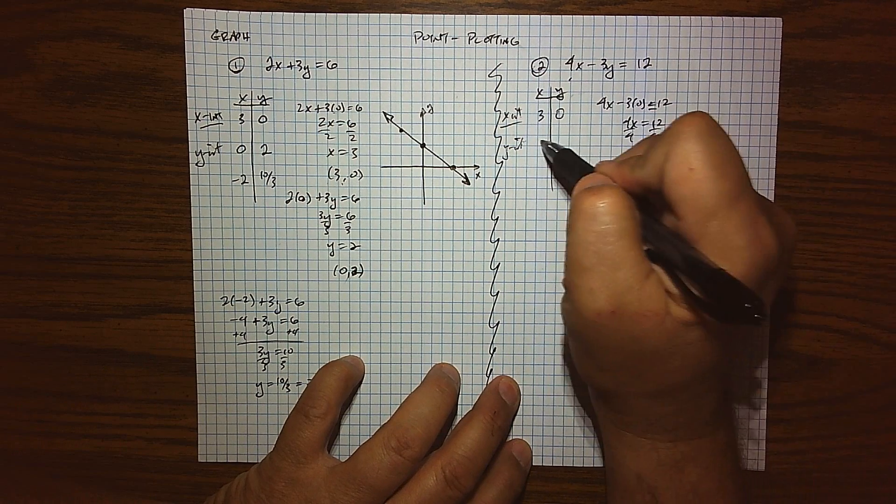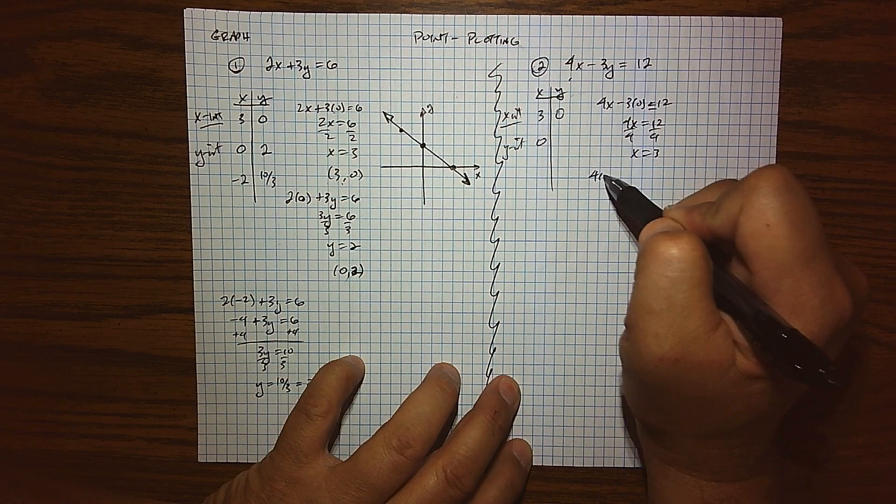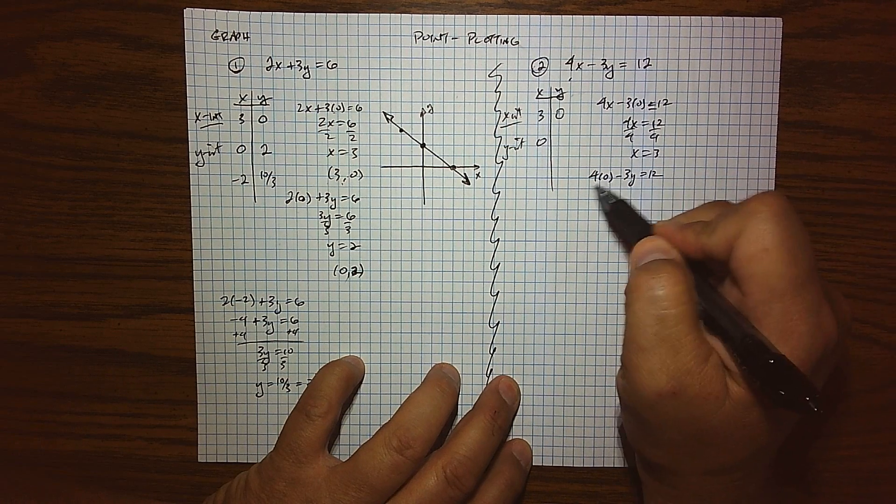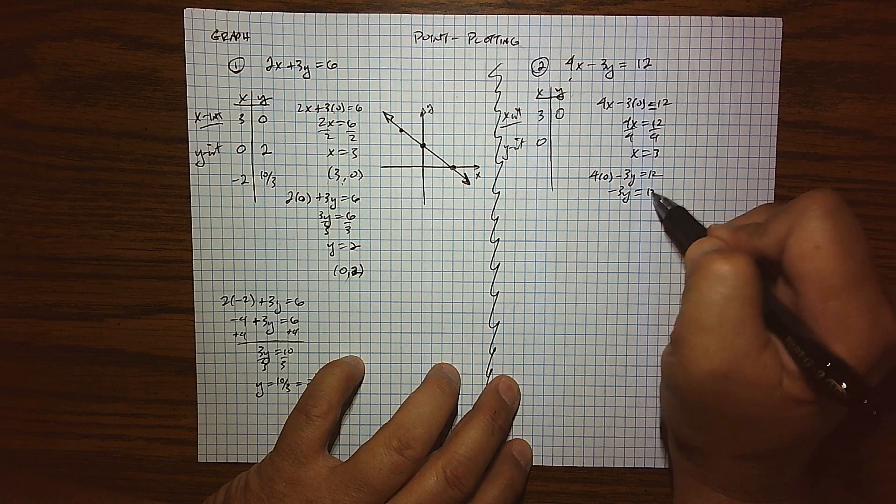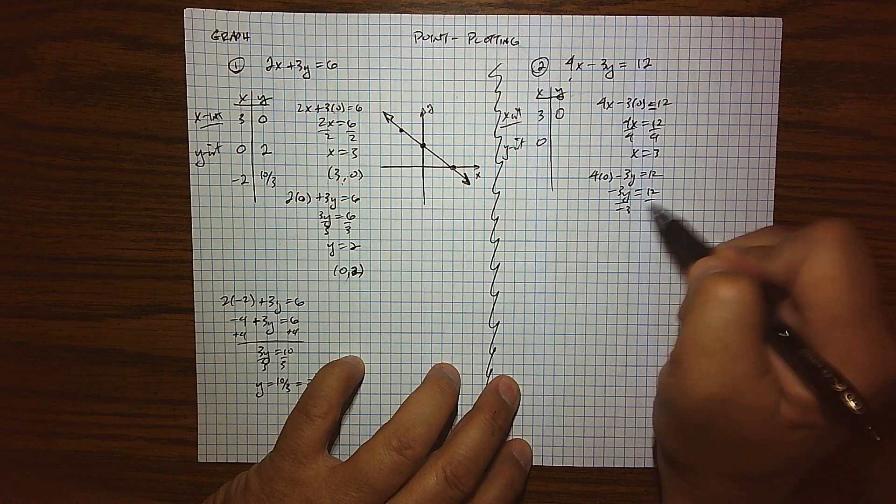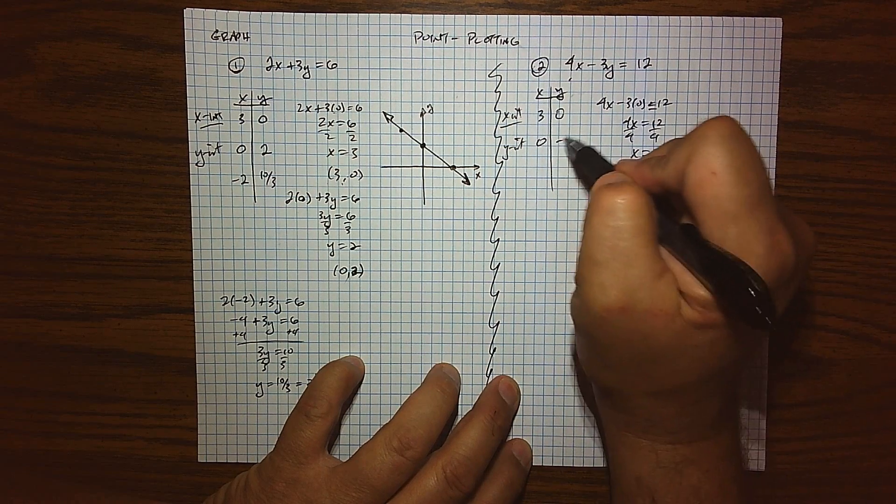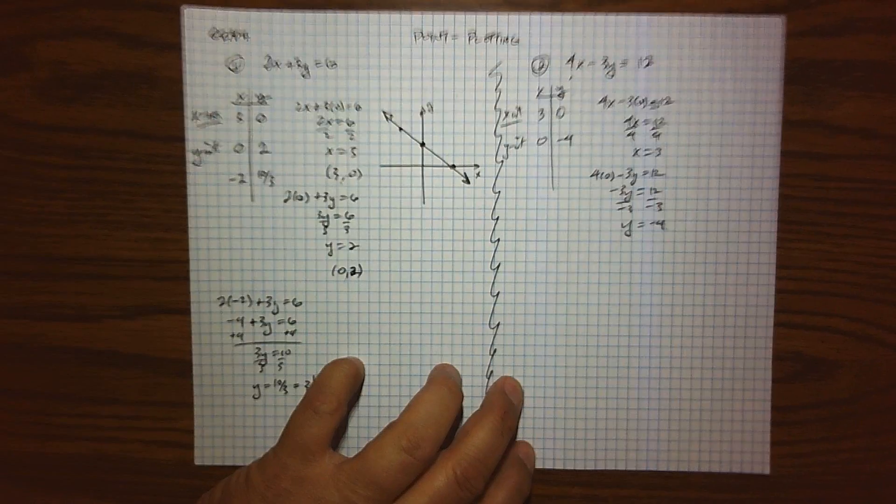Alright, so what about a y-intercept? Well, again, by definition, x has to be 0. So when I plug that into the equation, anything times 0 is gone. So we're left with negative 3y equals 12. Divide both sides by negative 3 and we get negative 4. So I now know where my y-intercept is, 0, negative 4.